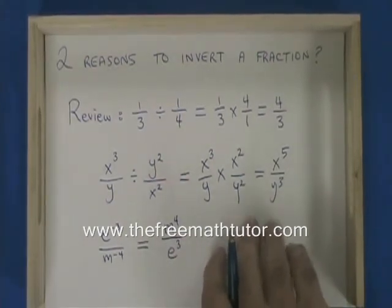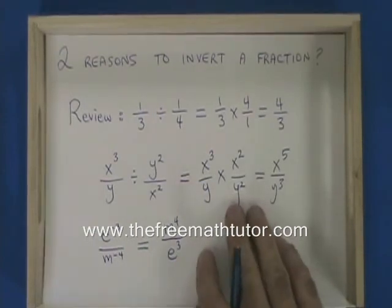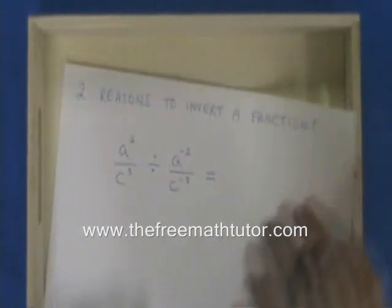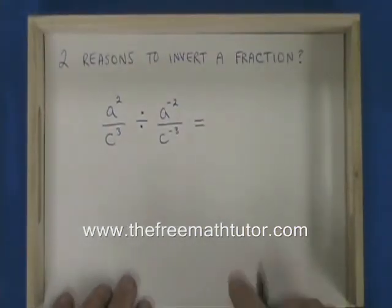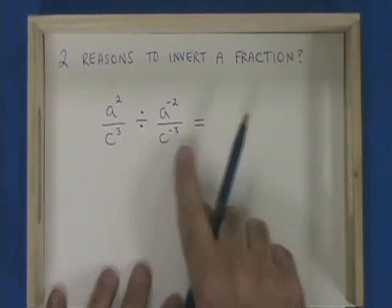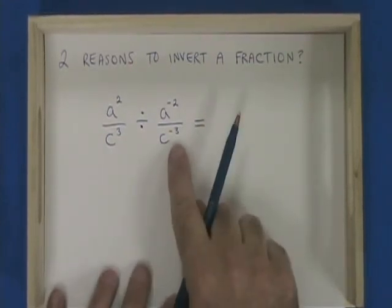Let's look at a question that makes us invert a fraction for both reasons. We have to invert a fraction twice. The first thing I'm going to do when I simplify this expression is I'm going to get rid of those negative signs in my exponents.